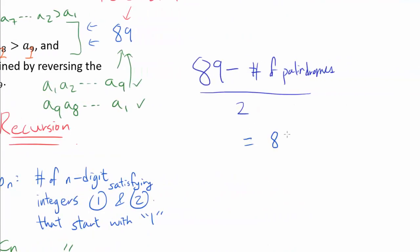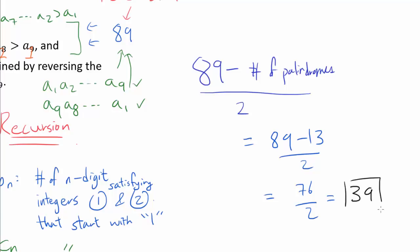So our answer is 89 minus 13, all over 2, which equals 76 over 2, giving a final answer of 38.